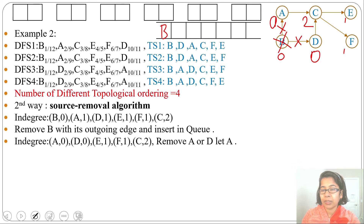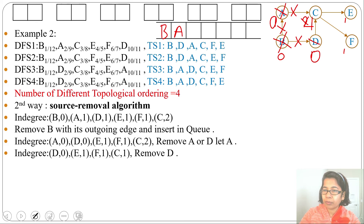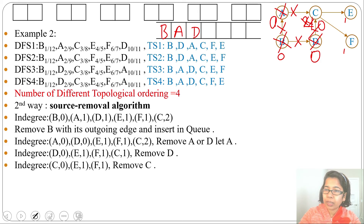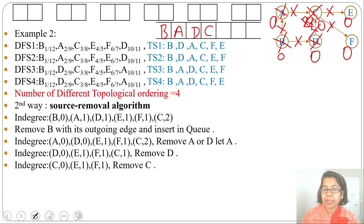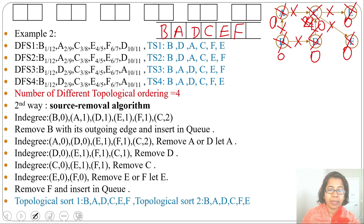Now we have two vertices with in-degree 0. Let me choose A. Removing A with its outgoing edges changes C's in-degree to 1. Insert A into the queue. Next, D has in-degree 0 — remove D and its outgoing edges; now C's in-degree becomes 0. Insert D into the queue. Next, C has in-degree 0 — remove C; the in-degree of E becomes 0 and in-degree of F becomes 0. Insert C. Now we have two vertices with in-degree 0; choose E first — remove E. Then remove F and insert into queue.